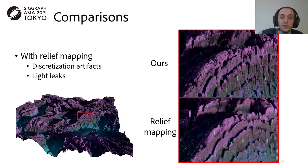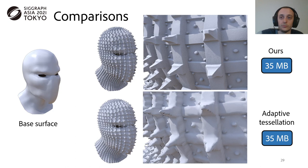We compare our method with relief mapping. We see on the right that we do not suffer from discretization artifacts, shown here, or leakage of lights through the surface that can happen with relief mapping. We also compared our method with adaptive tessellation, with an equal memory budget, here 35 MB. Our method is able to represent the full geometric complexity stored in the displacement map, while adaptive tessellation struggles to represent high frequencies with high fidelity.